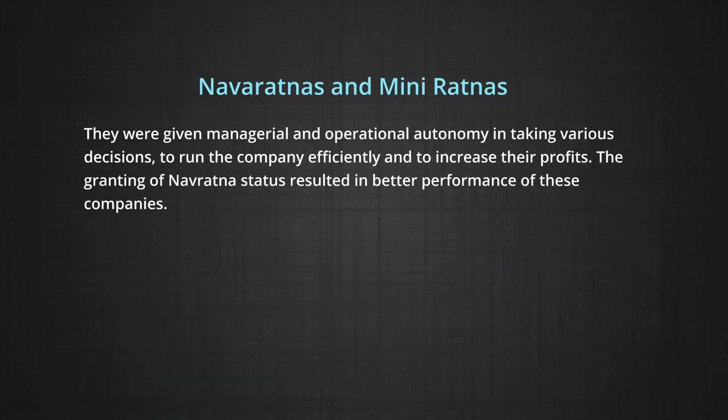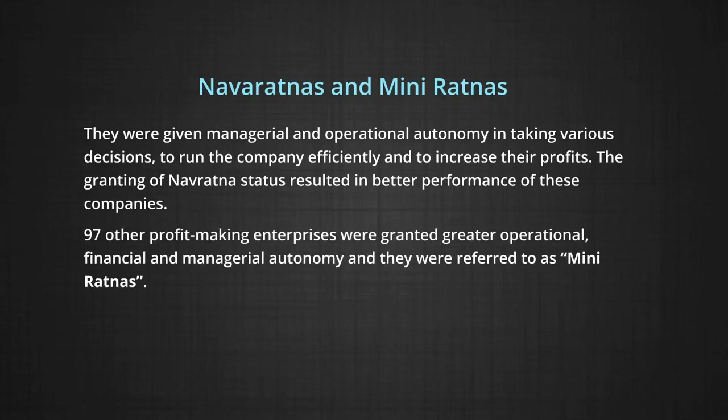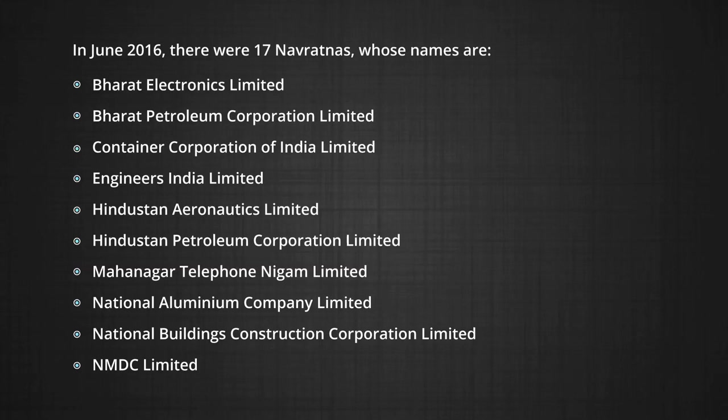Some PSUs have been granted special status as Navaratnas and Miniratnas — for example BHEL (Bharat Heavy Electricals Limited), BPCL, SAIL, etc. They were given managerial and operational autonomy to run the company efficiently and increase their profits. The granting of Navaratna status resulted in better performance. Apart from this, 97 other profit-making enterprises were granted greater operational, financial, and managerial autonomy and referred to as Miniratnas. In June 2016 there were 17 Navaratnas.